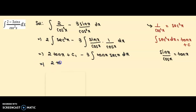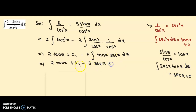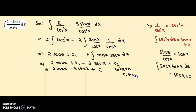Now this becomes 2 tan x plus c1 minus 3 times the integration of tan x sec x. We can write tan x sec x as sec x tan x. The integration of sec x tan x has a formula: sec x. So we write this as sec x plus c2. Therefore the final answer is 2 tan x minus 3 sec x plus c, where c1 plus c2 equals c. I hope you understood the solution. Thank you.